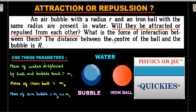An air bubble with radius r and an iron ball with the same radius are present in a large water body. Will they be attracted or repulsed from each other based on the gravitational force of interaction? What is the force of interaction between them? The distance between the center of the ball and the bubble is R. There is a large water mass — assume all the black part of the screen is water — in which the bubble and iron ball are separated by a distance r.